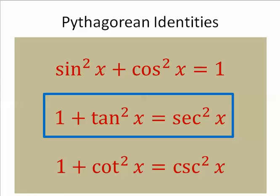The Pythagorean identity, 1 plus tangent squared equals secant squared, shows us how the two are the same answer.